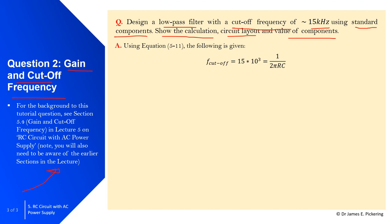Using equation 5.1 from the lecture, the cutoff frequency, which in our case is 15 kilohertz, so 15 × 10^3, equals 1 over 2πRC. We want to determine resistor and capacitor values to give us this cutoff frequency. Rearranging to make RC the subject: RC = 1 / (2π × 15 × 10^3).